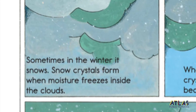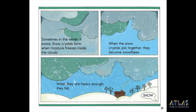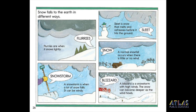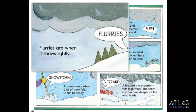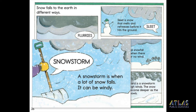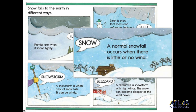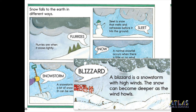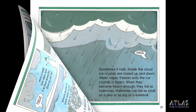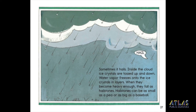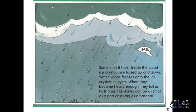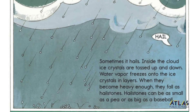Sometimes, in the winter, it snows. Snow crystals form when moisture freezes inside the clouds. When the snow crystals join together, they become snowflakes. When they are heavy enough, they fall. Snow falls to the earth in different ways. Flurries are when it snows lightly. A snowstorm is when a lot of snow falls and it can be windy. Sleet is snow that melts and refreezes before it hits the ground. A normal snowfall occurs when there is little or no wind. A blizzard is a snowstorm with high winds — the snow can become deeper as the wind howls. Sometimes it hails. Inside the cloud, ice crystals are tossed up and down. Water vapor freezes onto the ice crystals in layers. When they become heavy enough, they fall as hailstones. Hailstones can be as small as a pea or as big as a baseball.